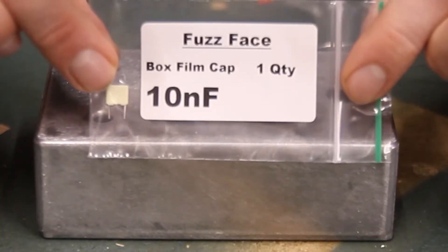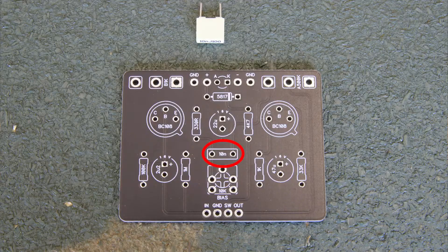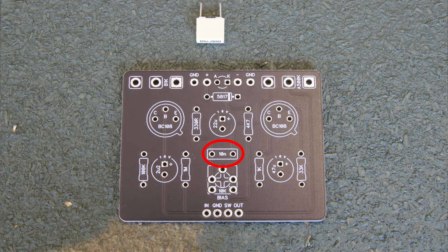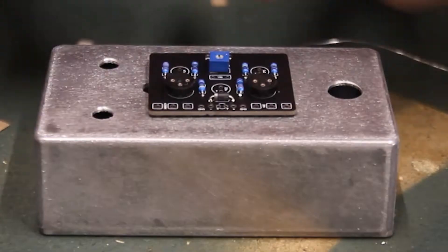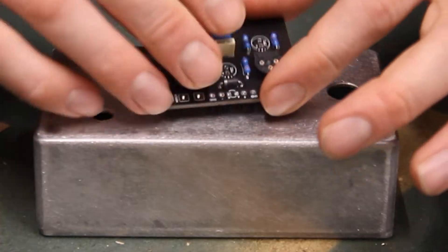Find the 10 nanofarad box film capacitor and it will go here on the board in the spot marked 10N. This capacitor has no polarity and does not matter which direction you solder it in.